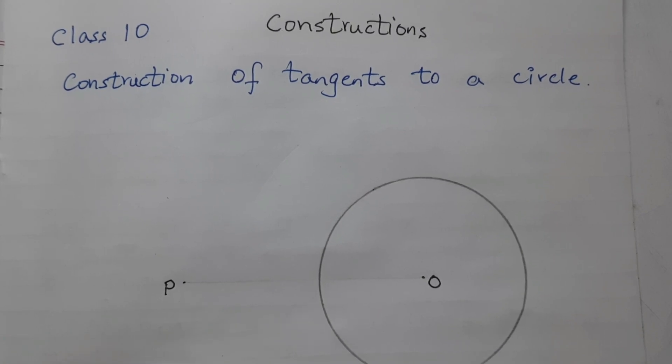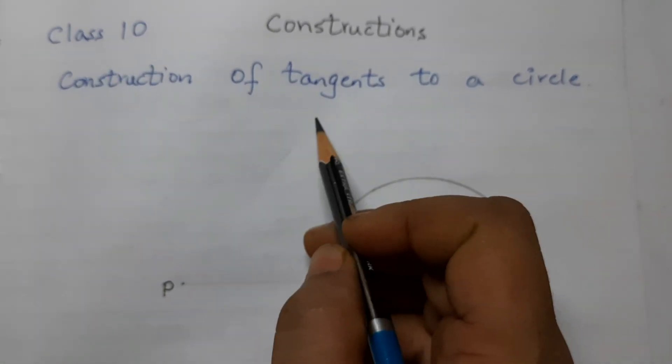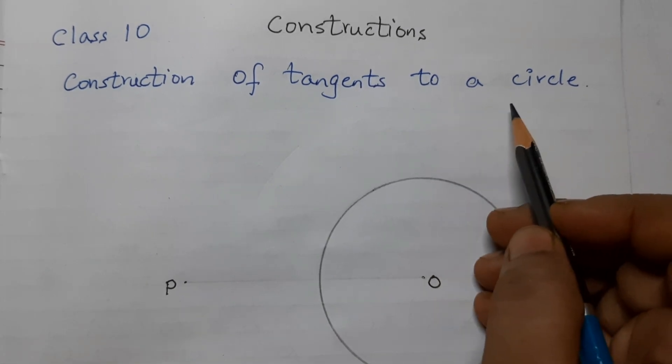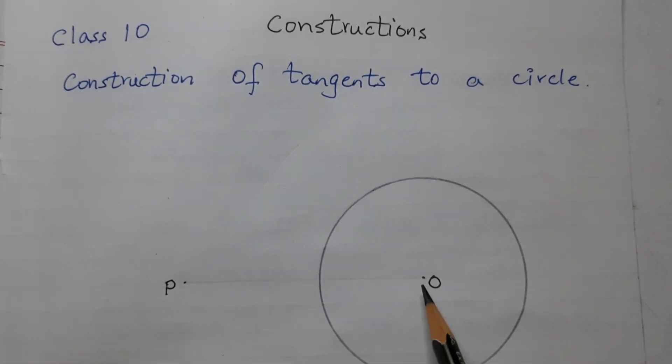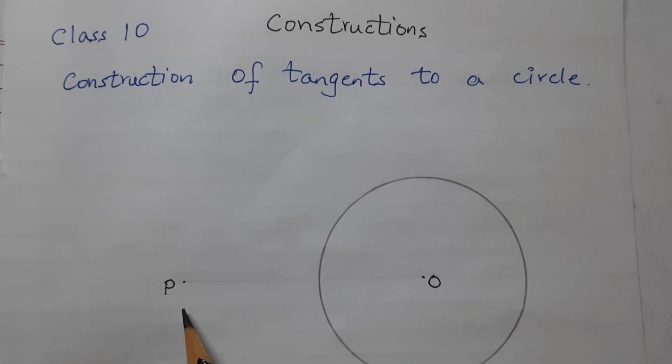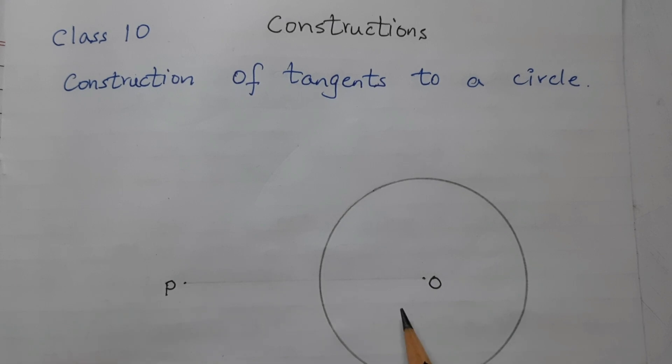Hello students, today we shall do construction of tangents to a circle. We are given a circle with center O and a point outside it. We have to construct two tangents from point P to the circle.